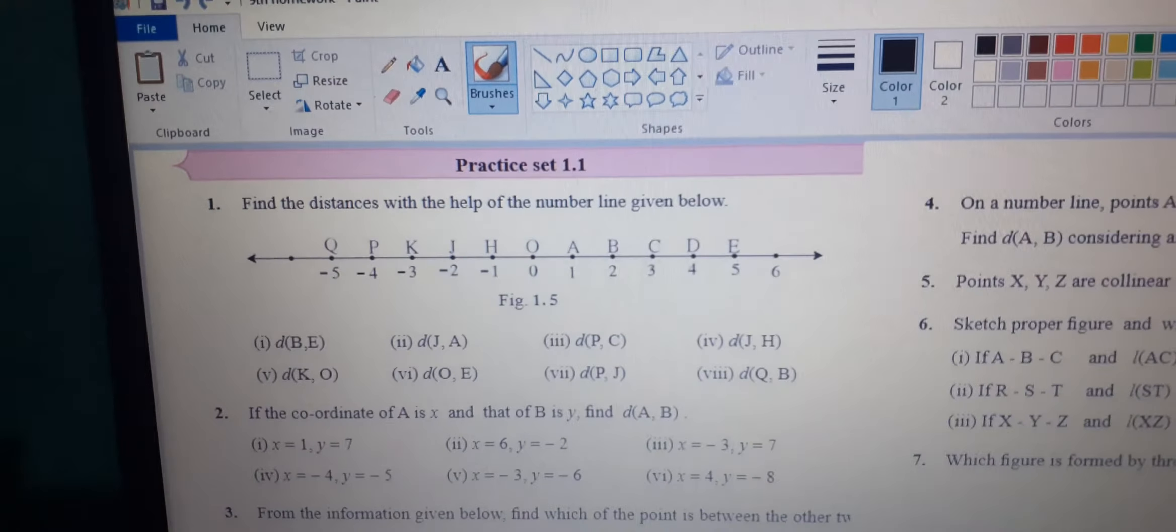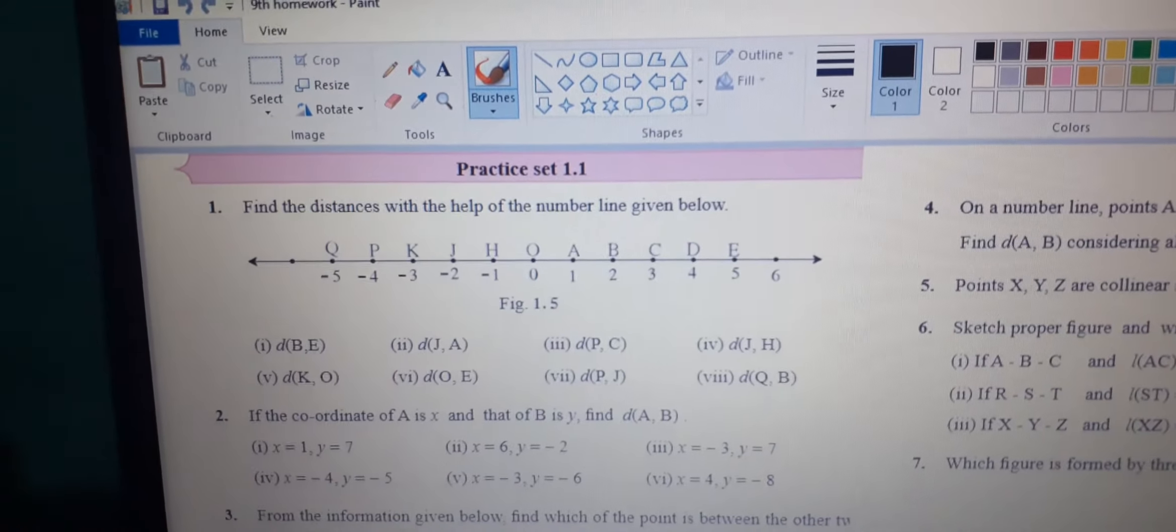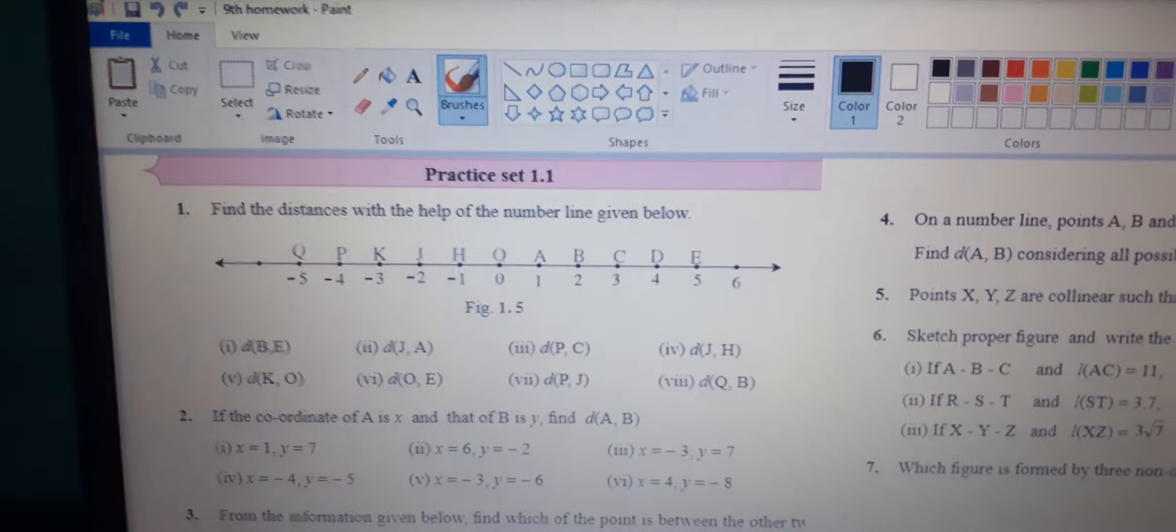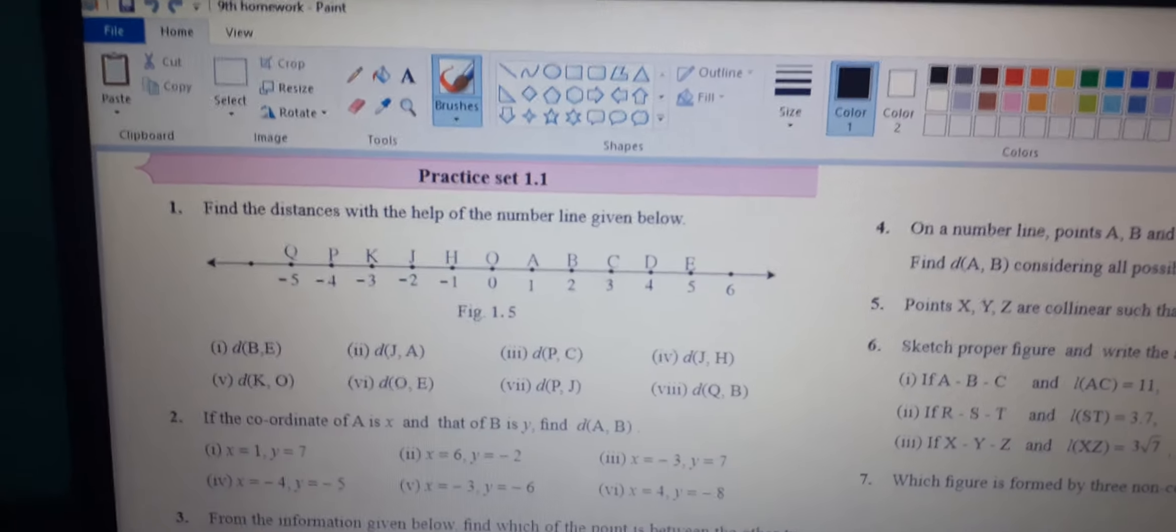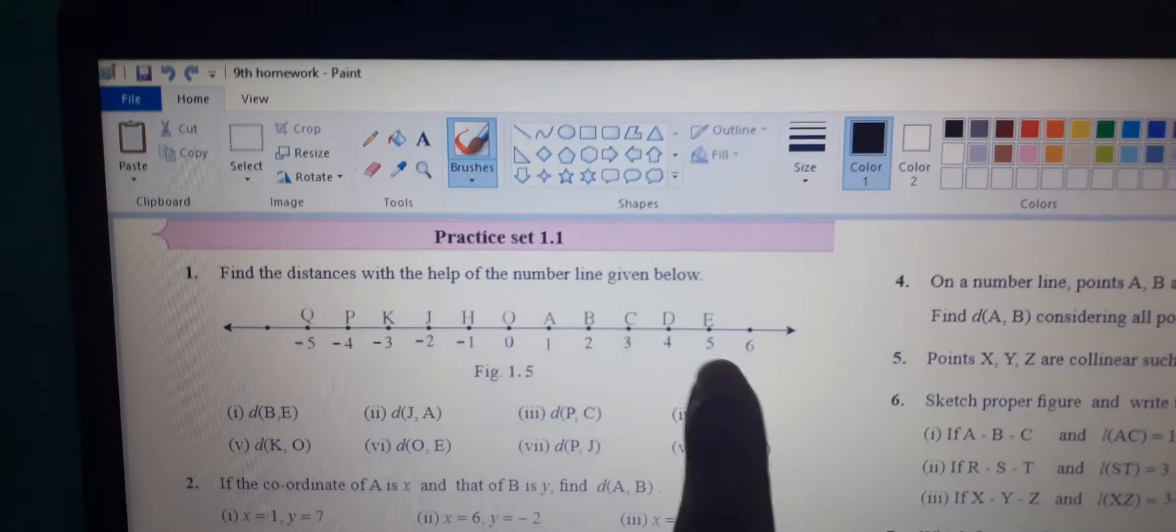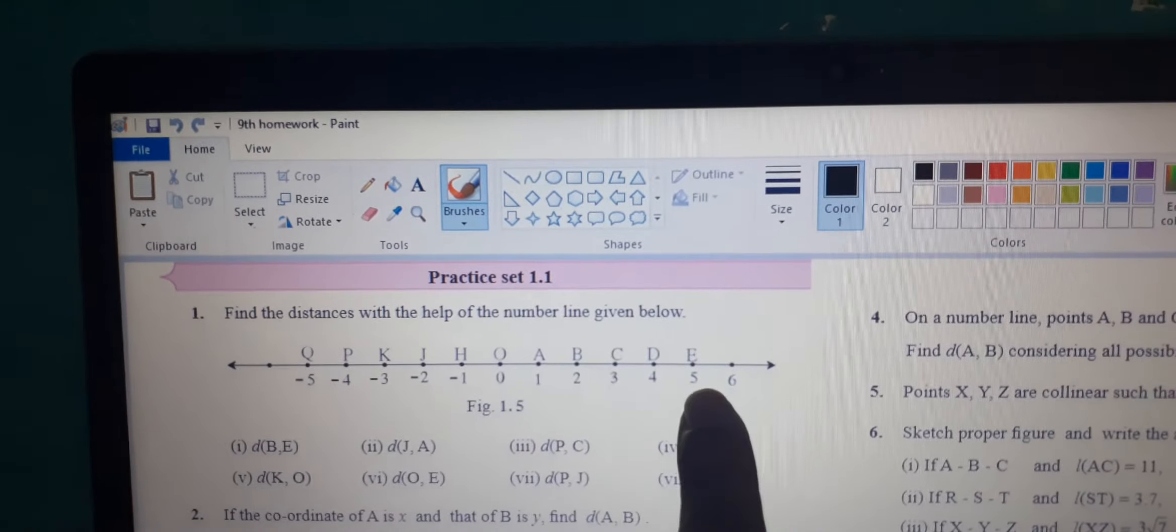As long as you can see both points, take the greater number and subtract the smaller number to find the distance. We keep our distance between B and E. B is 2 and E is 5.